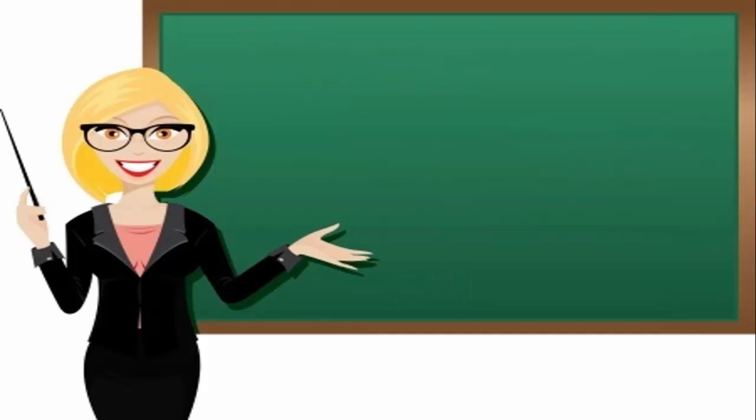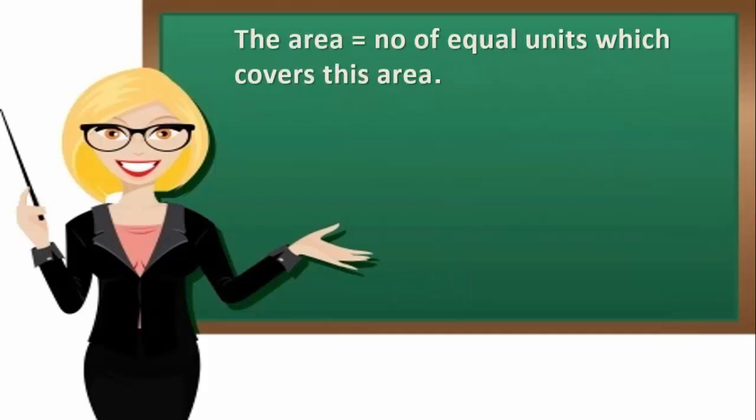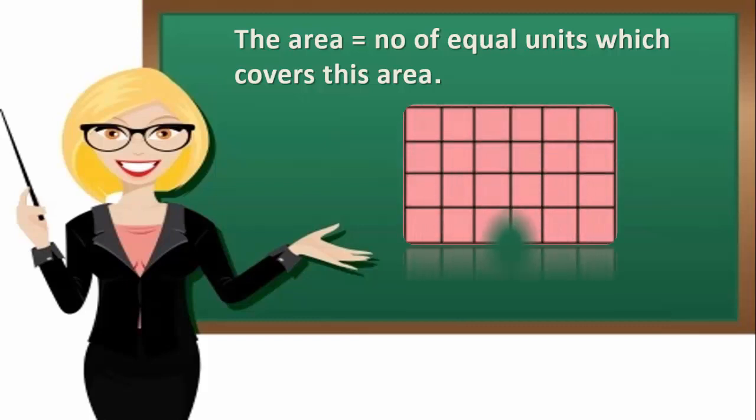The area equals number of equal units which covers this area. For example, look at this rectangle. The area of the rectangle equals 24 square units.